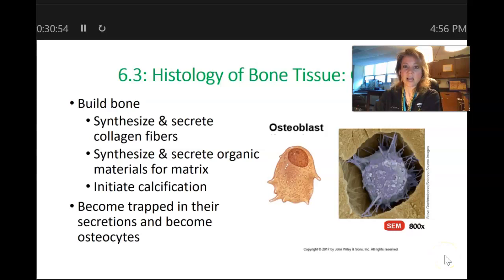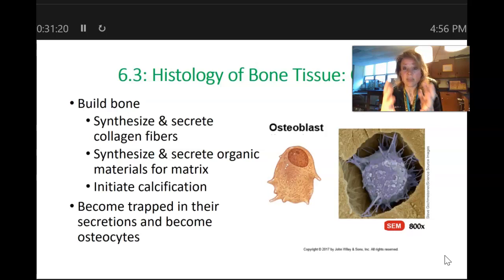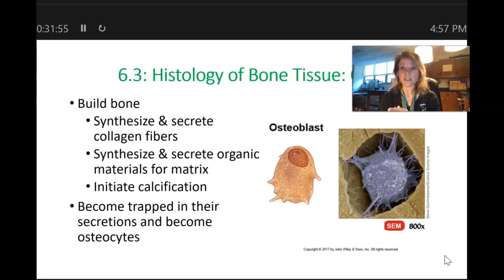Osteoprogenitor cells are going to become osteoblasts, and osteoblasts build bones — 'BB, blasts build' — that's what you've got to remember. These osteoblasts synthesize and secrete the monomers to create collagen. The collagen forms the framework for the bony matrix, and then the salts crystallize around it. Osteoblasts also initiate calcification. Once they reach an area, they secrete their collagen matrix, and once that collagen gets calcified, they have trapped themselves in their own secretion — at which point their name changes to osteocytes.